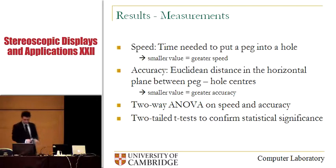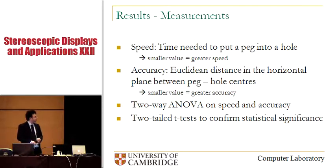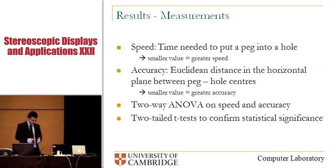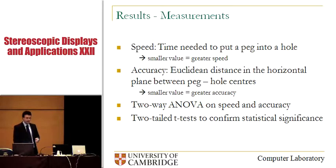I will talk about our results. Starting with the measurements from the pegboard task, a two-way ANOVA was run on all the speed and accuracy measurements to reveal any significant differences between experiment configurations. We also ran two-tailed T-tests to reveal particular differences between pairs of experiment configurations. The ANOVA table and T-test p-values can be found in our paper.